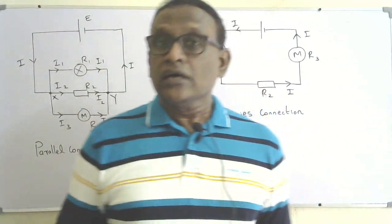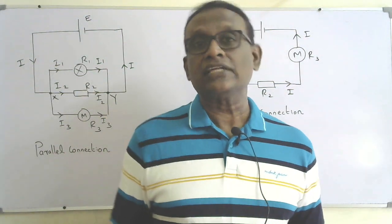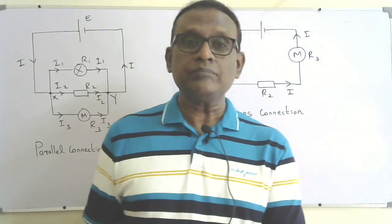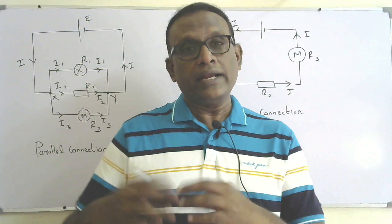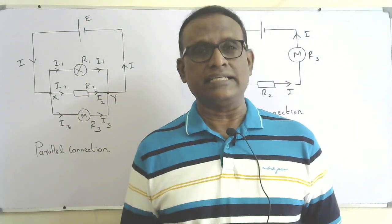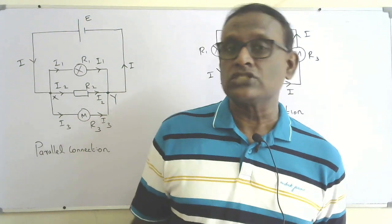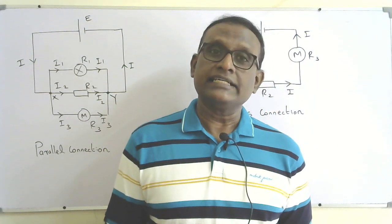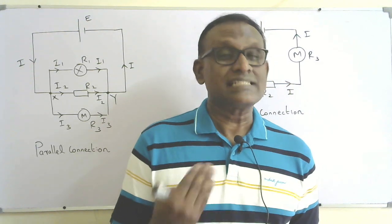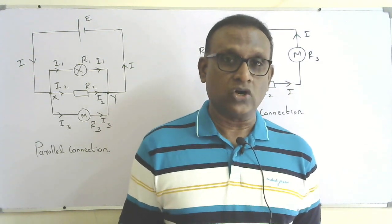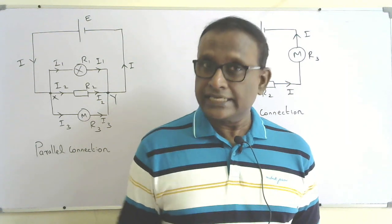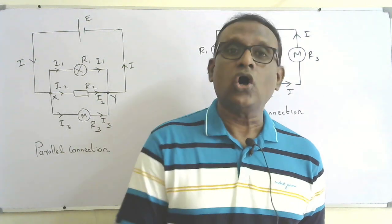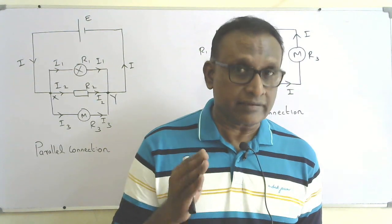When there are more than one component, they could be connected either in parallel or in series among them. When they are connected in parallel, that circuit is sometimes called a parallel circuit. When components are connected in series among them, that is called a series circuit. Some books call it series connection or parallel connection — but it is the components that are connected in series or parallel, not the circuit itself.